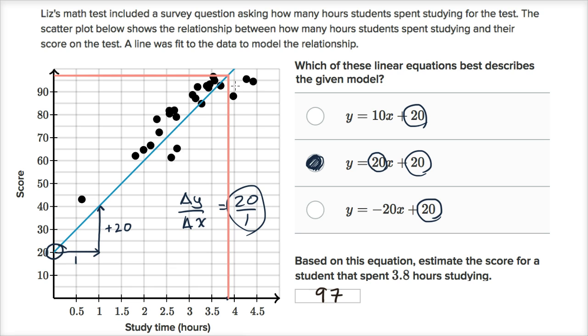And once again, this is only a model. It's not a guarantee that if someone studies 3.8 hours, they're gonna get a 97, but it could give an indication of what maybe might be reasonable to expect, assuming that the time studying is the variable that matters.